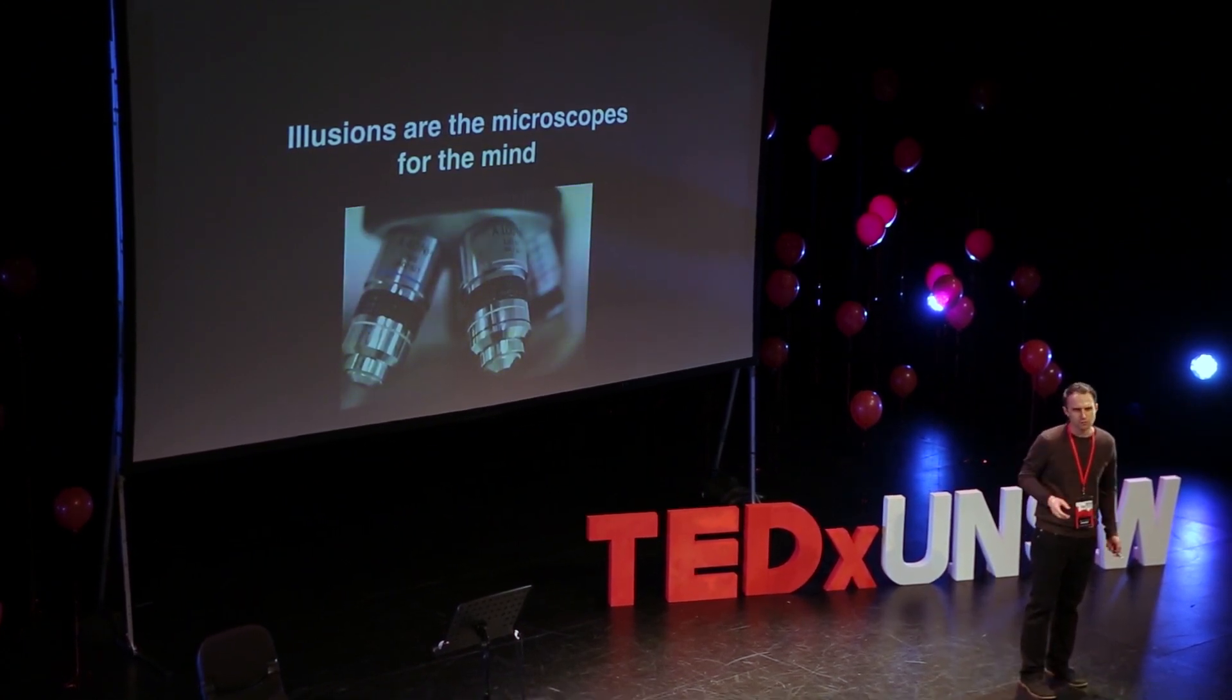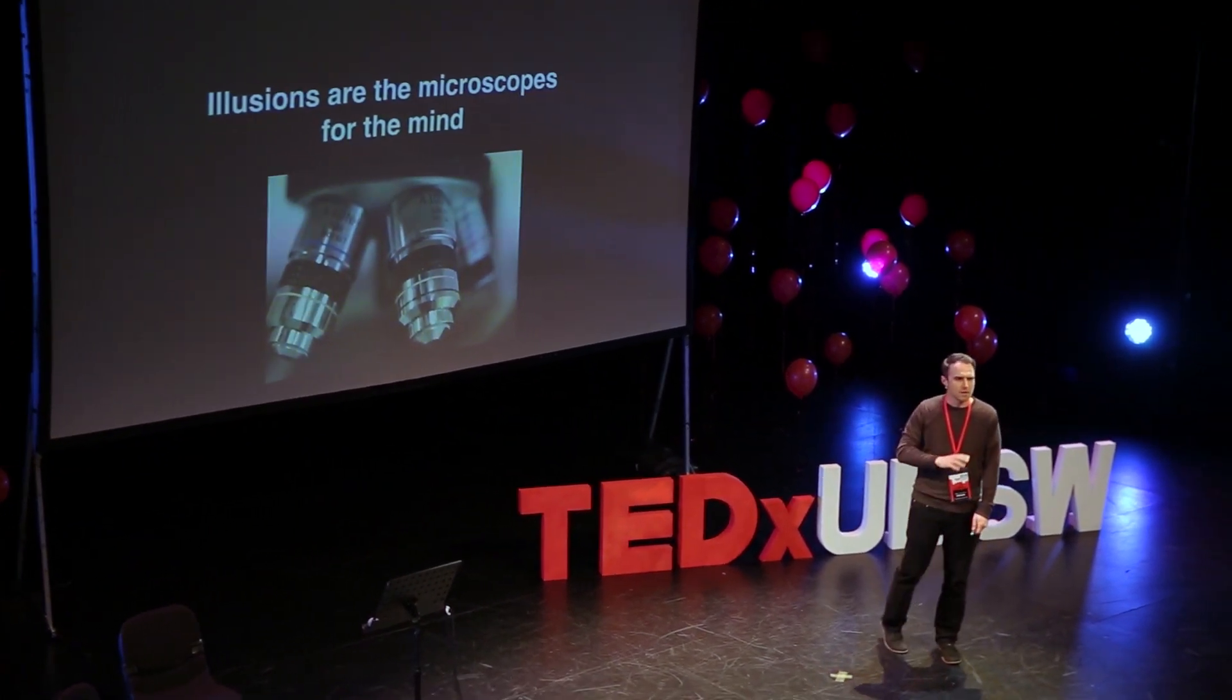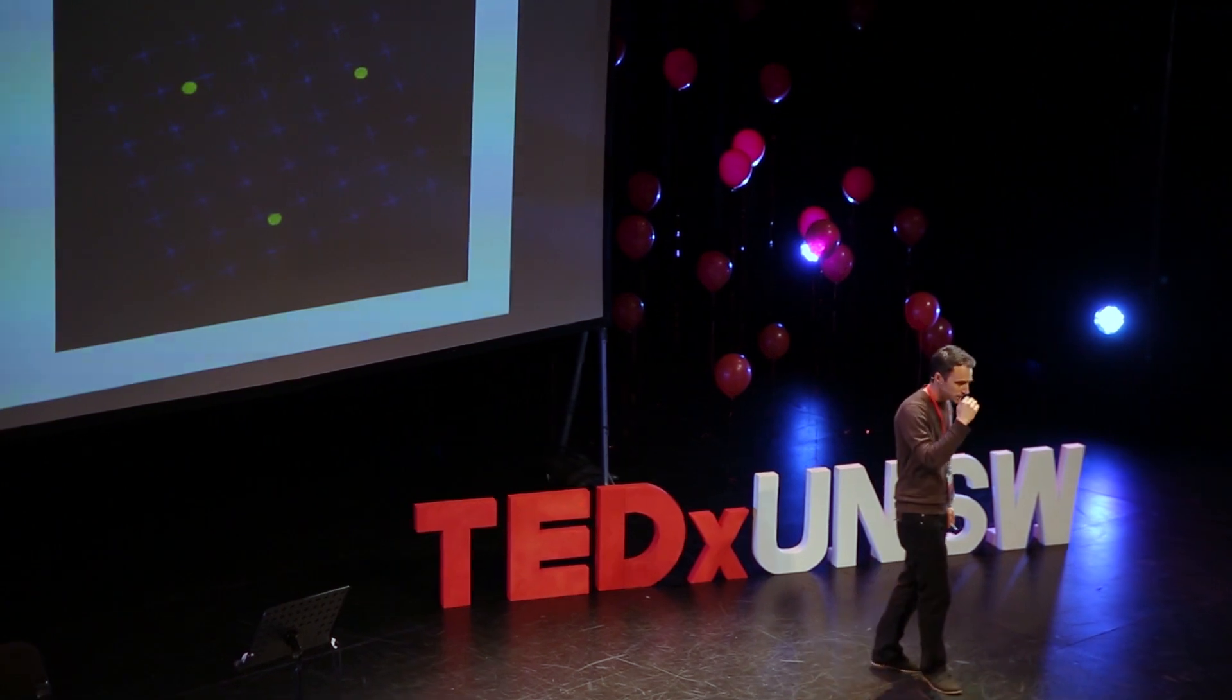What do I mean by illusions? There are all kinds of illusions. There are optical, there are visual, there are tactile, there are auditory, many different types. Here's one example.